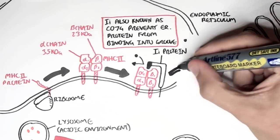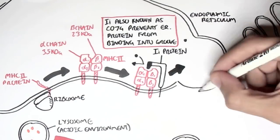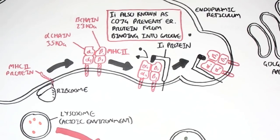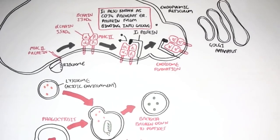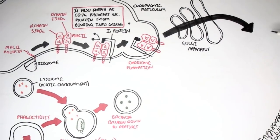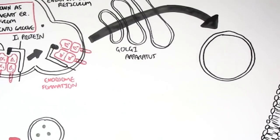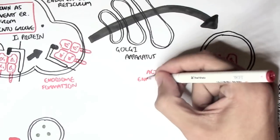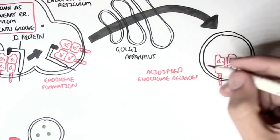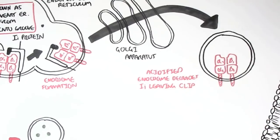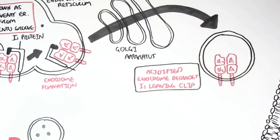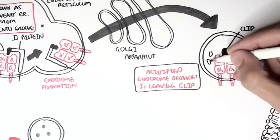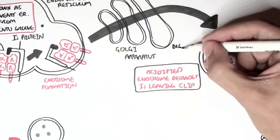The II protein also acts as a chaperone, bringing the MHC class II out from the endoplasmic reticulum in an endosome, then through the Golgi apparatus, and forming a new endosome. This new endosome is slightly acidic. The acidified endosome degrades the II protein, leaving a fragment called clip on the binding site or groove of the MHC class II, thus allowing no peptides or antigens to bind onto MHC class II.